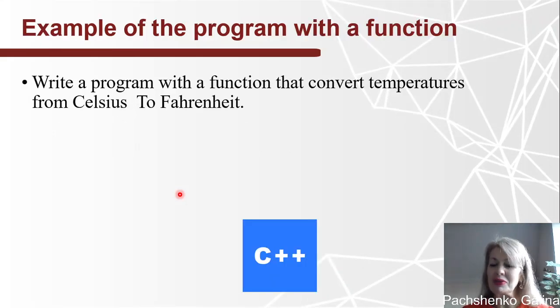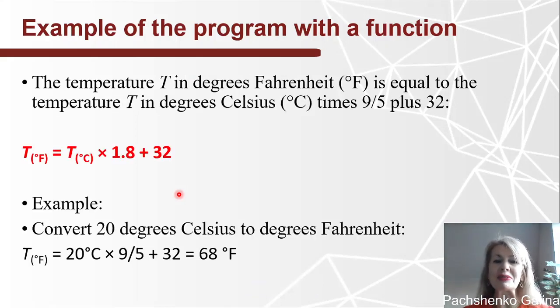Example of the program with a function. Write a program with the function that converts temperatures from Celsius to Fahrenheit. The temperature T in degrees Fahrenheit is equal to the temperature T in degrees Celsius times 9 divided by 5 plus 32. Here goes the formula. And example: convert 20 degrees Celsius to degrees Fahrenheit, so it will be 68, just to check our result.